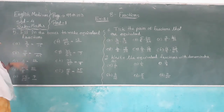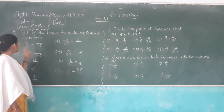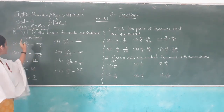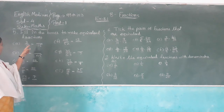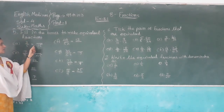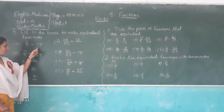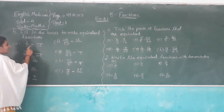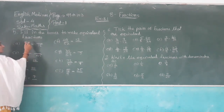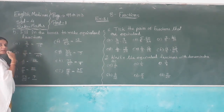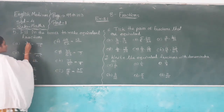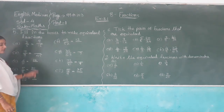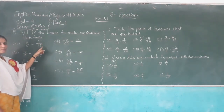Question five: Fill in the boxes to make equivalent fractions. First one — three out of five equals blank out of fifteen. Five times three is fifteen, so multiply numerator by three as well. Three times three is nine. So the equivalent fraction is nine out of fifteen.